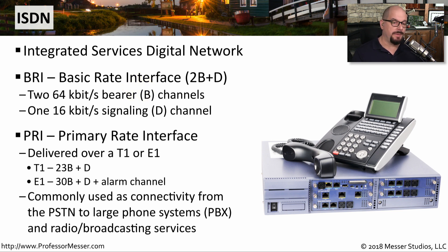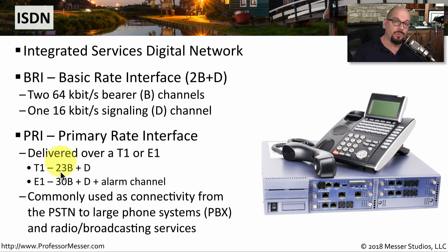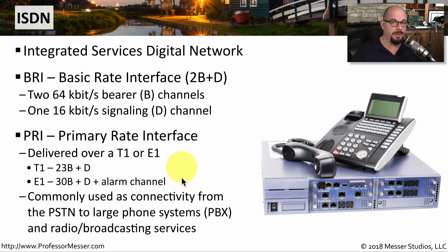For larger ISDN implementations, you would use a PRI connection, or Primary Rate Interface. This is usually brought into an organization over a T1 or an E1 line. A T1 line can support 23 bearer channels and one single D channel. An E1 would support 30 bearer channels and a D channel, along with a separate alarm channel.